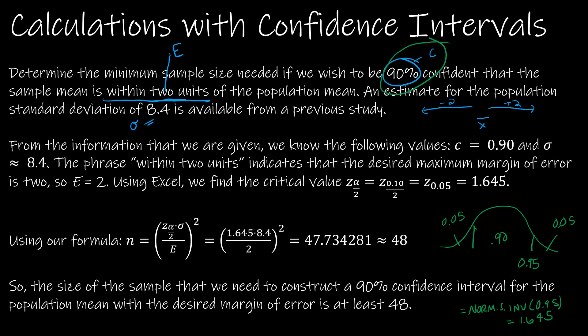So all I have to do then is use my calculator or Excel to find the 1.645, multiply it by the 8.4, which is sigma, divide it by E, which is 2. Once I find that solution, I square it. And that's about 48. So we always are going to round up. So about 48. So the sample size that we need to construct a 90% confidence interval for the population mean with the margin of error of 2 is at least 48.